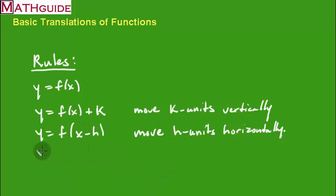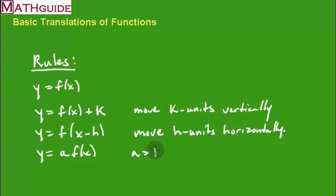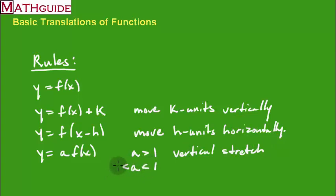Our last rule: what if we multiply the function by some value a? There are three scenarios. If a is greater than 1, it's going to stretch the function vertically — a vertical stretch. If a is between zero and one, it's going to be a vertical shrink, meaning things get closer to the x-axis. When you stretch, things get farther away vertically from the x-axis.